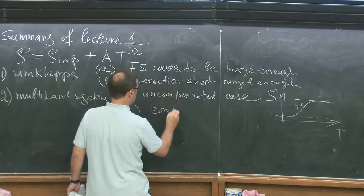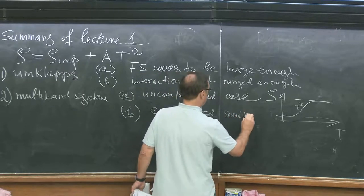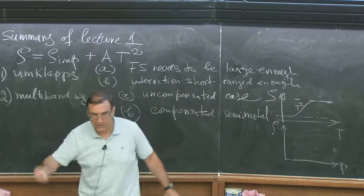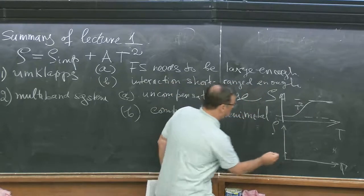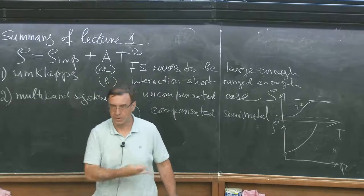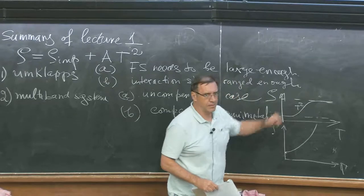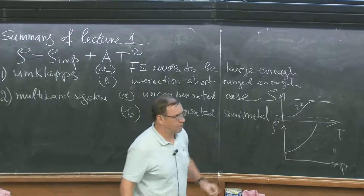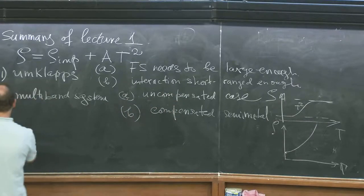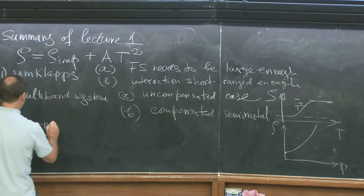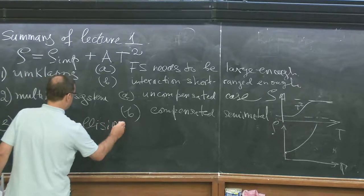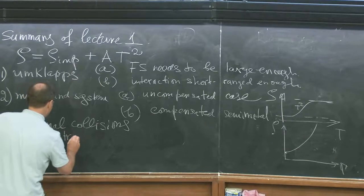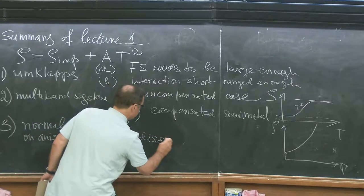If the system is a compensated semimetal, you may add intra-band relaxation or you may not. But if you do, you will start with some residual resistivity. But there will be no upper bound on resistivity — it can go infinitely high in this model. In reality, this saturation is going to be masked by phonons. So this is the model in which you have only electron-electron friction between the bands, and impurity. I started to talk about the third case, which is normal collisions — normal, in this context, means not umklapp — on an anisotropic Fermi surface with disorder.